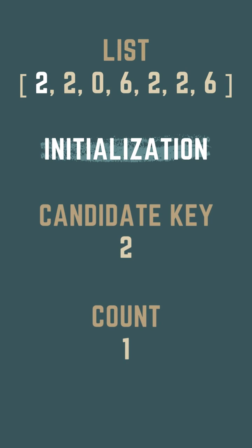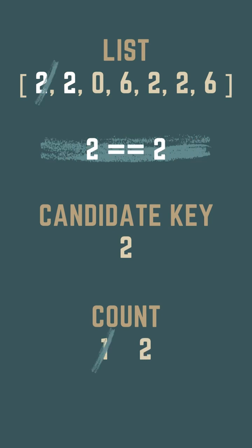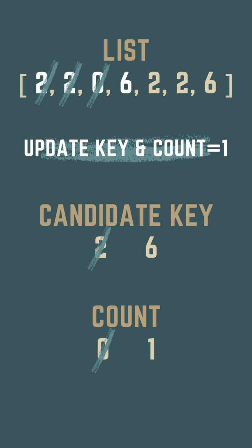Initialize the first element 2 as the candidate key with count 1. The next element 2 matches the candidate key, so increment the count. Then decrement the count twice as 0 and 6 don't match the candidate key. If the count reaches 0 at any point, the candidate key is updated with the current list element — that is 6 — with count 1.